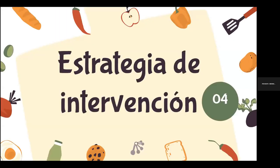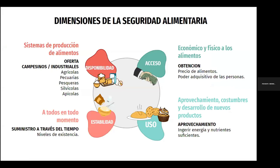¿En qué consistió la estrategia de intervención? En los cuatro pilares de la seguridad alimentaria. La seguridad alimentaria de la FAO establece que toda persona tiene derecho a la alimentación y que esa alimentación debe ser suficiente, nutritiva e inocua. Se divide en cuatro dimensiones: disponibilidad, acceso, uso y estabilidad. Cuando queremos resolver un problema de malnutrición, podemos atacarlo por medio de estas cuatro dimensiones, aunque no todas se puedan aplicar.